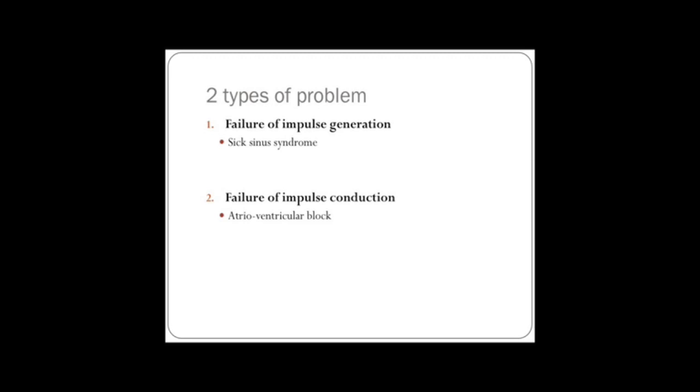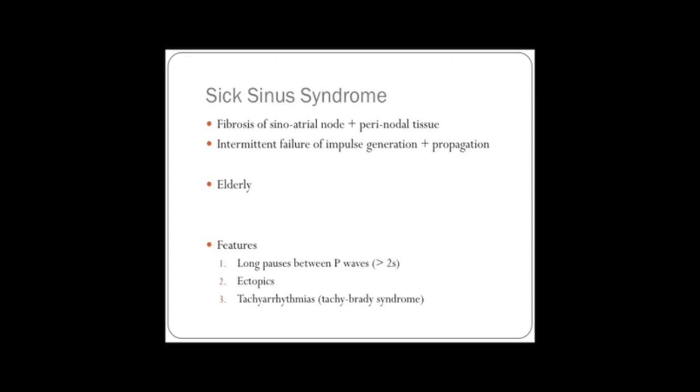Now you'll be most familiar with a situation where it doesn't conduct. That's AV block, and you've got, remember, your three types. But impulse generation is also important, and the condition there is called sick sinus syndrome. Basically what happens in this is it's a disease usually of the elderly, and there's fibrosis of the sinoatrial node and the surrounding nodal tissue. And what basically happens is there's intermittent failure of impulse generation within the sinoatrial node, and sometimes failure of propagation, reflecting the perinodal fibrosis as well.